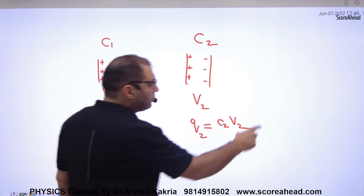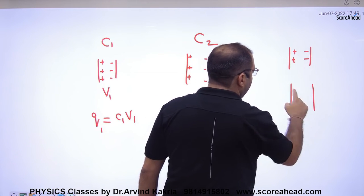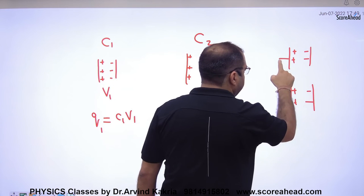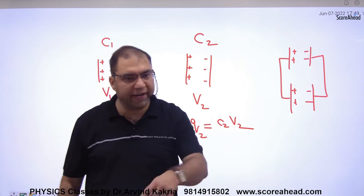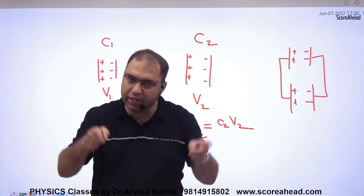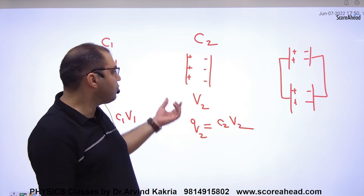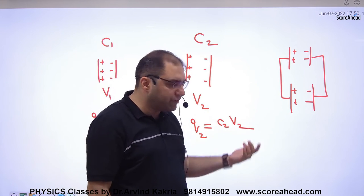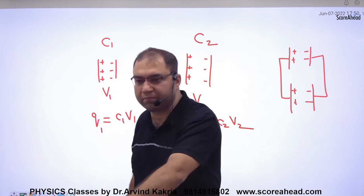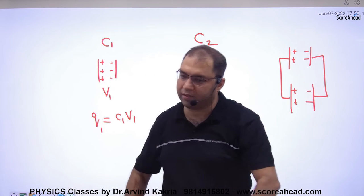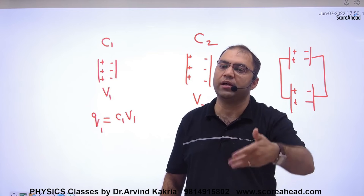Now I have joined them — positive plate with positive and negative plate with negative — because both have different potential differences. V1 is one potential difference, V2 is another. Charge moves from higher potential to lower potential, and it keeps moving until both potentials are the same.